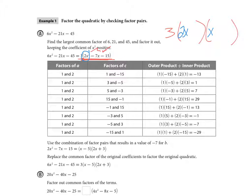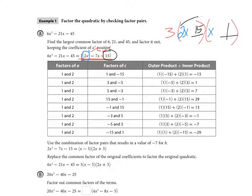Some people call this the trial and error method. I need to figure out what factors give me 15. It could be 1 and 15, so I try that: the outer product would be 30x and the inner would be 1x. Subtracting to try to get negative 7x doesn't work. Then I try 15 and 1 reversed: outer gives 2x, inner gives 15x, subtract to get 13x — still not my middle term.